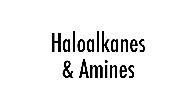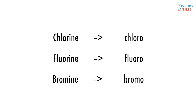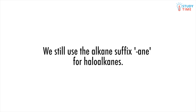A haloalkane is simply an alkane which contains a halogen group in the place of where one hydrogen atom would have otherwise been. A halogen group is simply an element from the final group of the periodic table. In level 2, the most common ones you'll be dealing with are chlorine, fluorine and bromine — referred to as chloro, fluoro and bromo. Because a haloalkane is technically still an alkane, we use the suffix "-ane" when naming haloalkanes. The halogen group is treated as a branched group and is referenced with its carbon location at the start of the molecule.